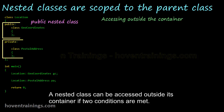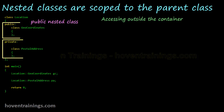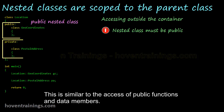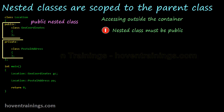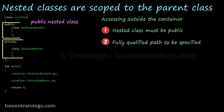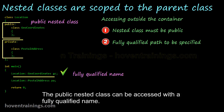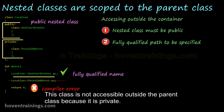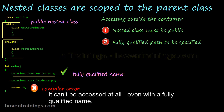A nested class can be accessed outside its container if two conditions are met. Only public nested classes or members can be accessed outside — this is similar to the access of public functions and data members. The public nested class can be accessed with a fully qualified name, but a private nested class is not accessible outside the parent class at all, even with a fully qualified name.